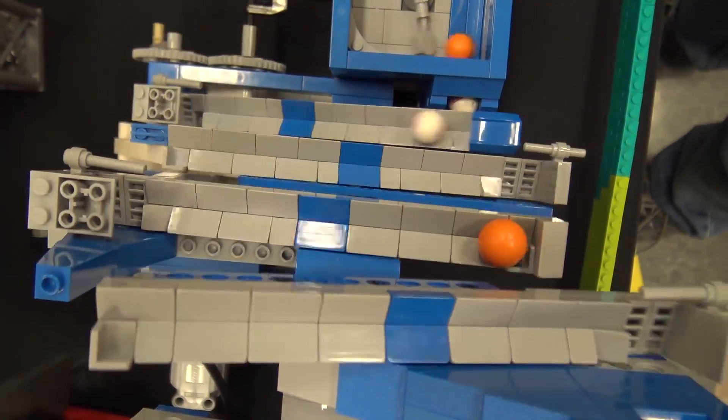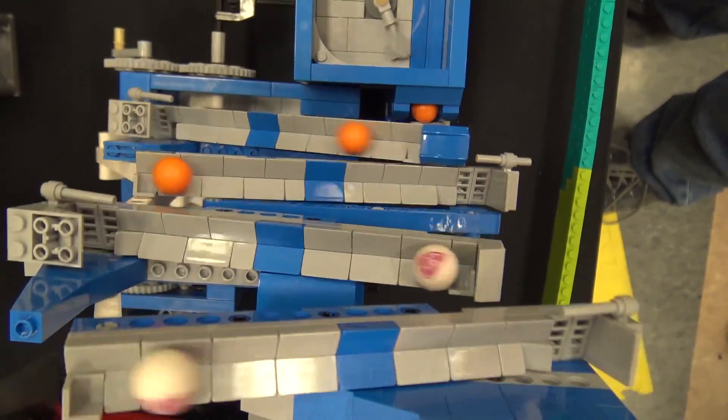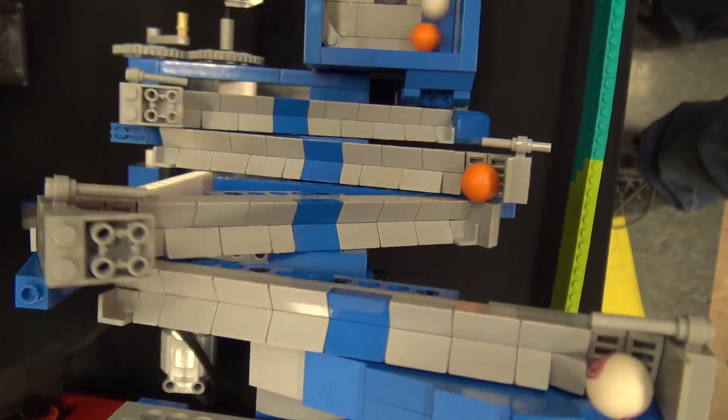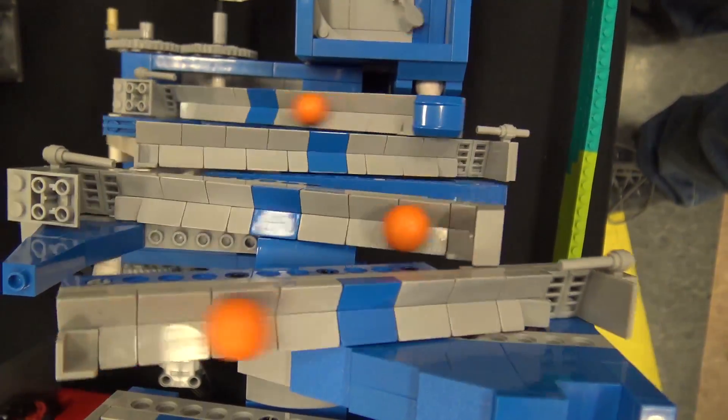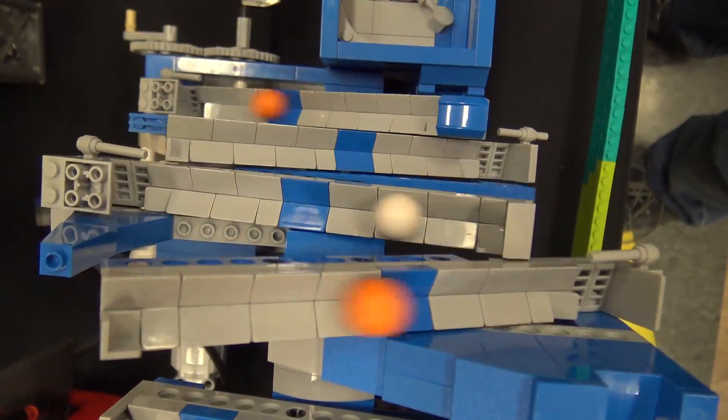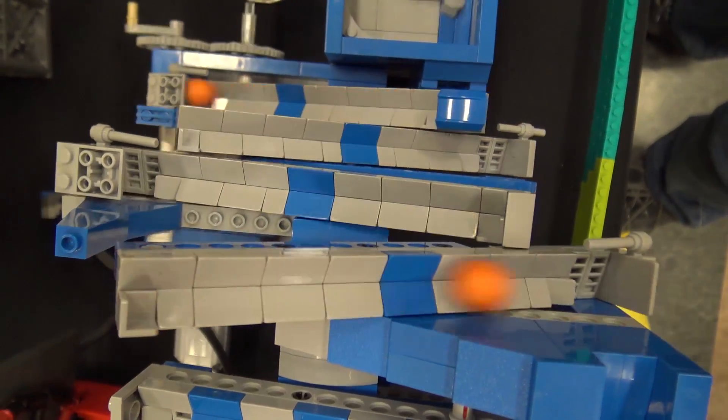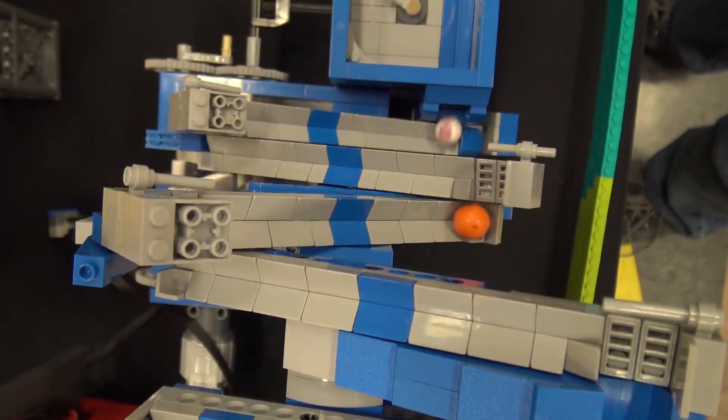When I was testing it earlier in the show, it wasn't quite doing it, so putting the two inverted slopes there made a big difference. Balls were actually bouncing off the end and then bouncing back up the ramp, but that traps them a little better. It's those little modifications that make all the difference.